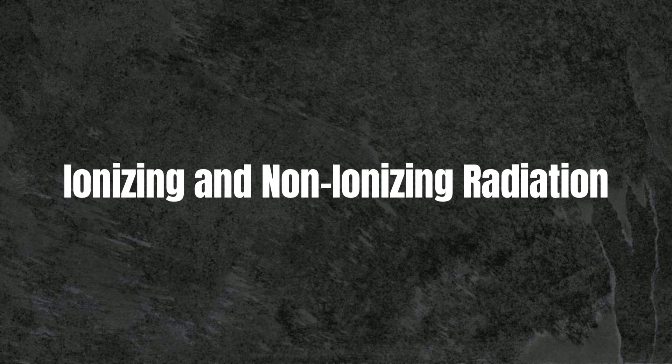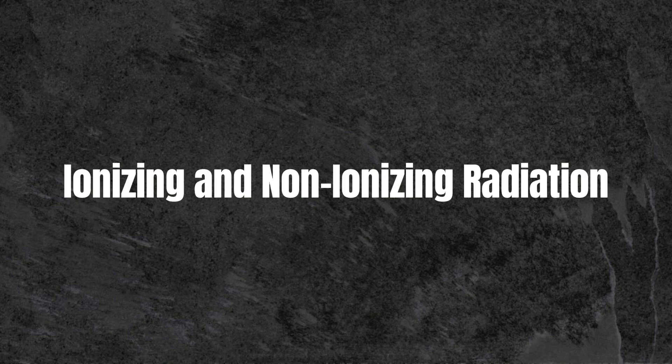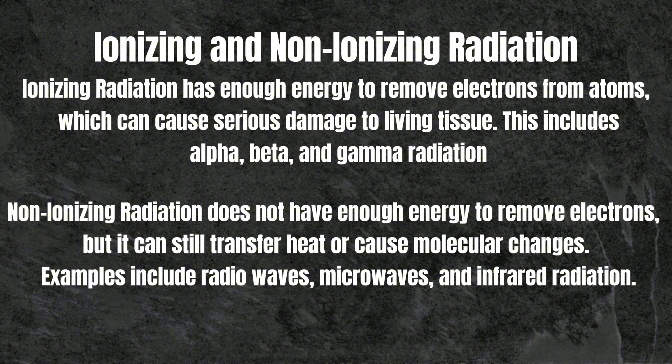Another classification is ionizing and non-ionizing radiation. Ionizing radiation has enough energy to remove electrons from atoms, which can cause serious damage to living tissue. This includes alpha, beta, and gamma radiation. Non-ionizing radiation does not have enough energy to remove electrons, but it can still transfer heat or cause molecular changes. Examples include radio waves, microwaves, and infrared radiation.